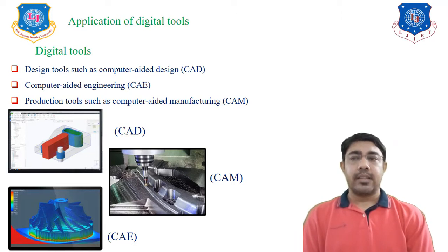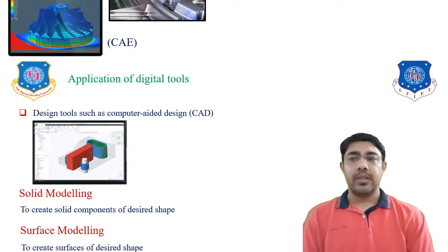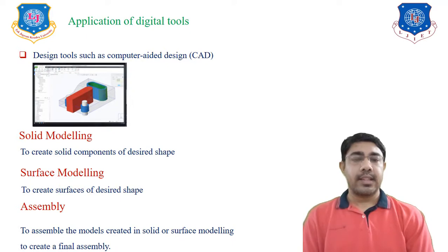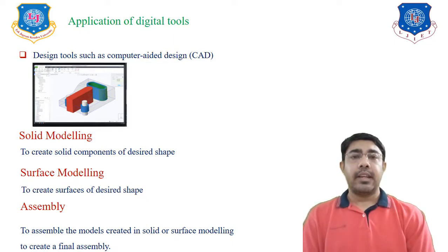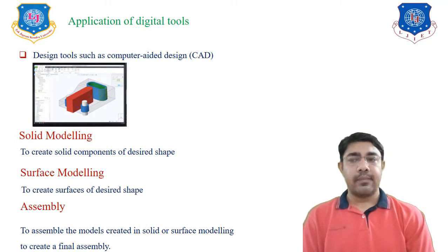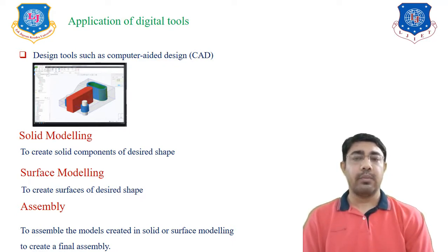Let's look at the applications of these three digital tools. For design tools, the first application of CAD is solid modeling — to create solid components of the desired shape. The second application is surface modeling, to create the surface of a desired shape. The third is assembly — assembling parts made by solid or surface modeling to create final assemblies.